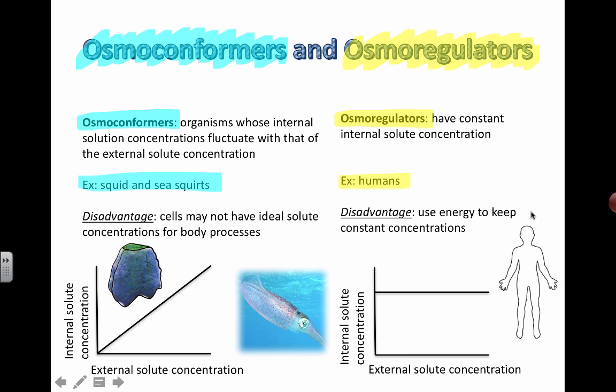On the other side, here's the outline of a human. Osmoregulators try to keep a constant internal solute concentration — and that's what we do. It's part of homeostasis, and our kidneys help us maintain our water balance, which is one of the key components of keeping that balance.